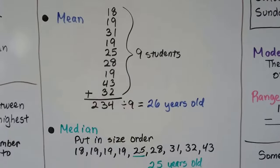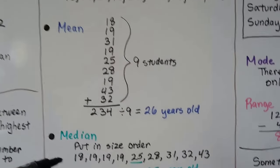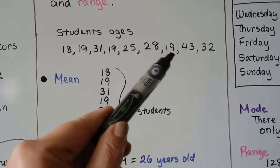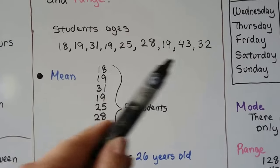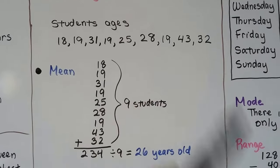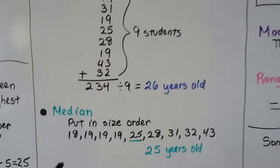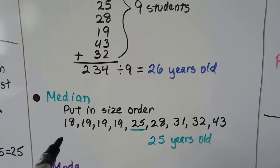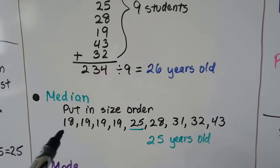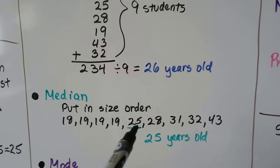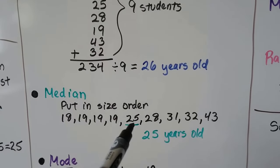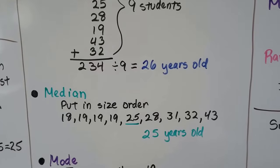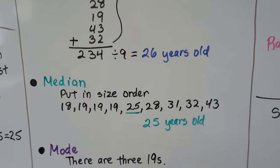For the median, we have to put them in size order. So if you look at these, we have a 19 here, we have a 19 way over here. They're not in size order. See the 43 and then a 32? So let's put them in size order and then just pick the middle number. There's 9. It's odd. So we should be able to just go right to the middle number. The median is 25 years old. That's the median age of this set of people.